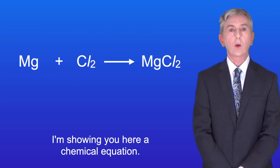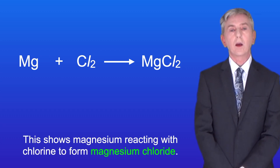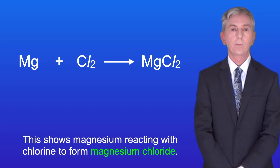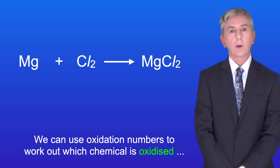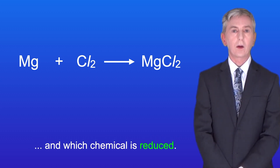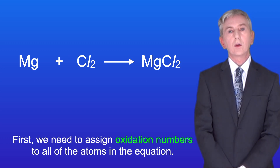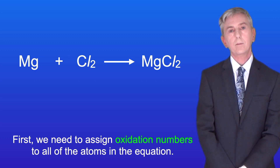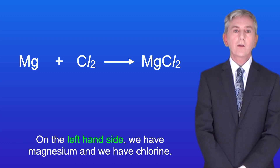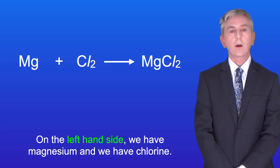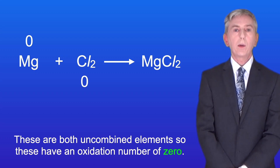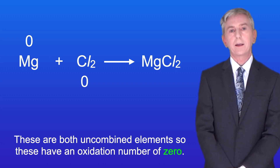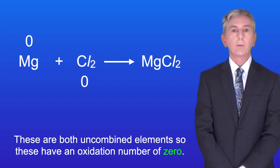Here is a chemical equation showing magnesium reacting with chlorine to form magnesium chloride. We can use oxidation numbers to work out which chemical is oxidized and which is reduced. First we need to assign oxidation numbers to all of the atoms in the equation. On the left hand side we have magnesium and chlorine. These are both uncombined elements so they have an oxidation number of zero.